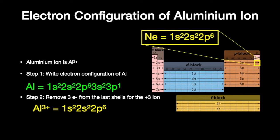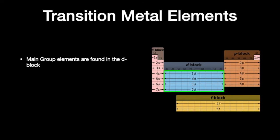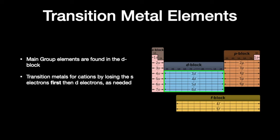So aluminum ion is predicted to be very stable, and plus 3 is a common oxidation state. Now how about transition metals? Transition metals are a little different — they are found in the D block of the periodic table, and they're all metals so they lose electrons to become cations. But you need to be very careful: the S electrons are lost first, then the D electrons are lost later as needed, and they do not achieve a noble gas electron configuration in many cases.